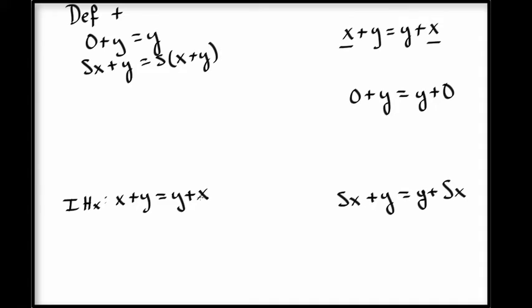Let's look at the base case first. By definition, the left hand side is just y. So we need to show that y equals y plus 0. Unfortunately, we don't know anything about this plus 0. We need some kind of lemma that says if you add something to 0, it doesn't change it. So let's prove that first.